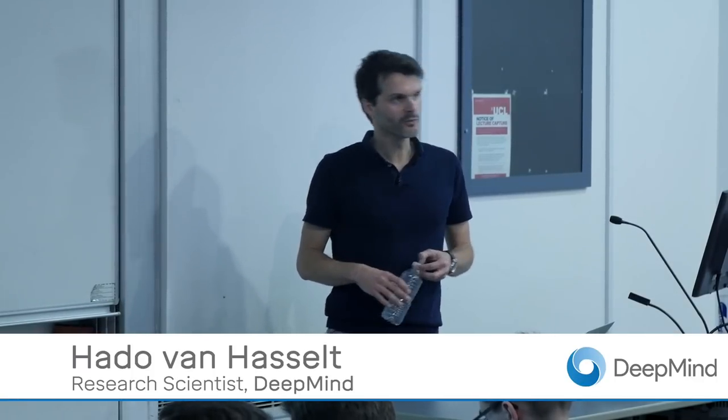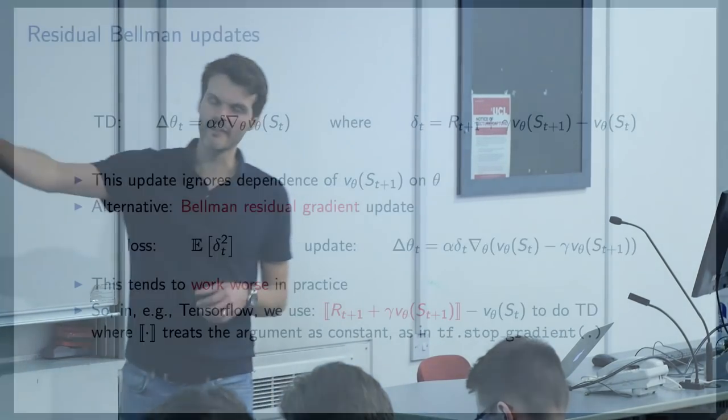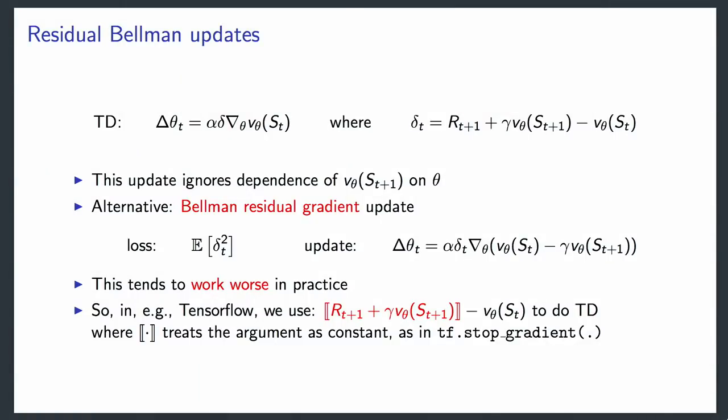There's another potential source of confusion I want to preempt. When doing bootstrapping, there's a natural temptation: since the TD error depends on your parameters, you could take the squared TD error as a loss and take the gradient of that. To get that loss, you'd replace the true value with the reward plus discounted next state value before taking the gradient. Previously, I first took the gradient while still having the true value there.